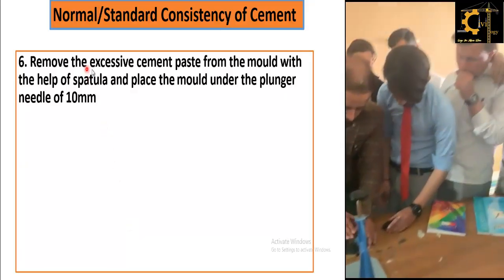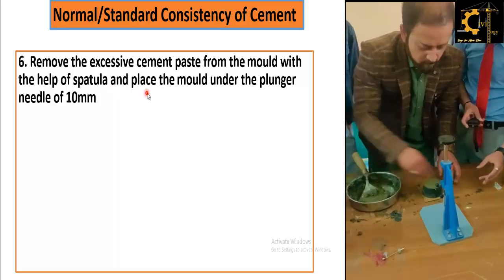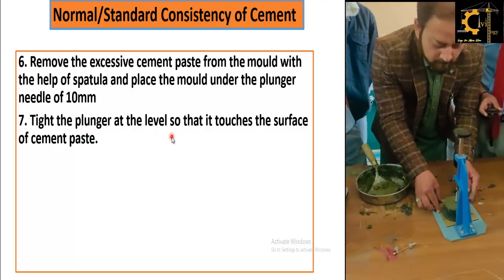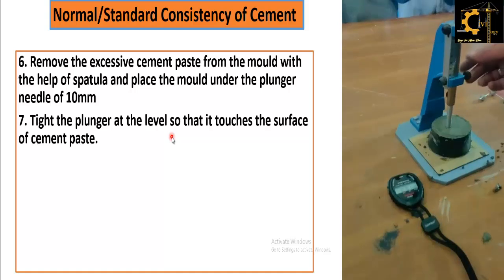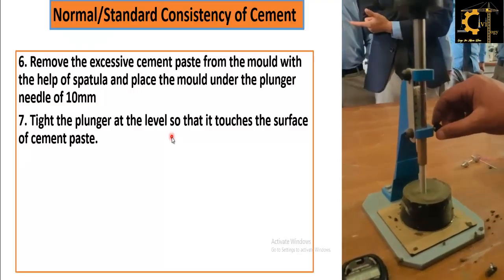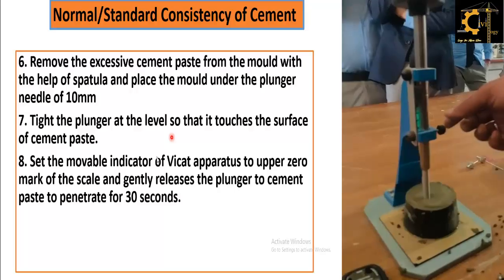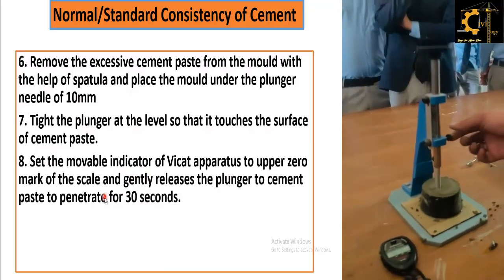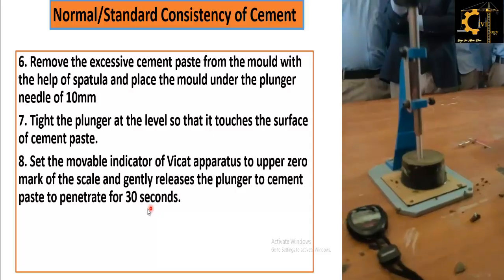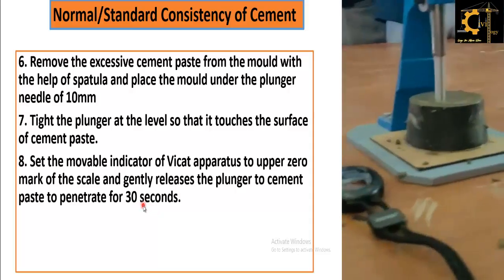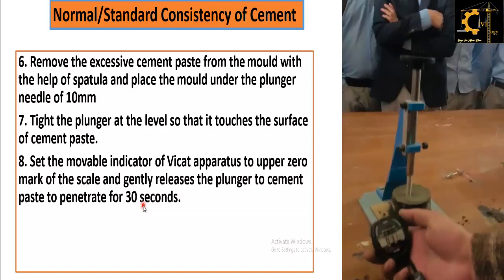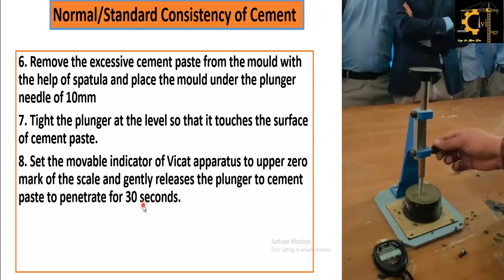Completely fill the Vicat mold thoroughly and press to fill it. Remove the excessive cement paste from the mold with the help of a spatula and place the mold under the plunger needle of 10 mm diameter. Tighten the plunger at the level so that it touches the surface of the cement paste, and note down the value on the graduated scale. Set the movable indicator of the Vicat apparatus to the upper zero mark and gently release the plunger to penetrate the cement paste for 30 seconds — this is the gauging time.